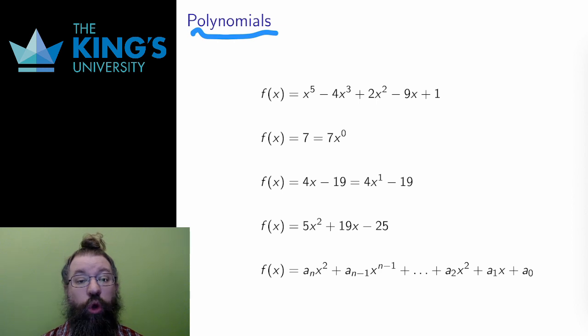where the whole number of powers are 5, 3, 2, and 1, and 0 for the constant term. Then I multiply by constants, in this case 1, 4, 2, 9, and 1, and I add or subtract to put it all together.